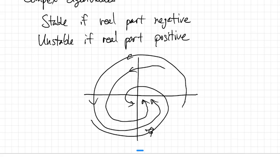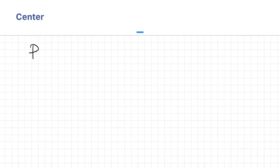A special case of the spiral that's worth mentioning is called the center. That's when the eigenvalues are pure imaginary. So we're at the boundary between stable and unstable. They are stable, but in kind of a weak sense, or a neutral sense.